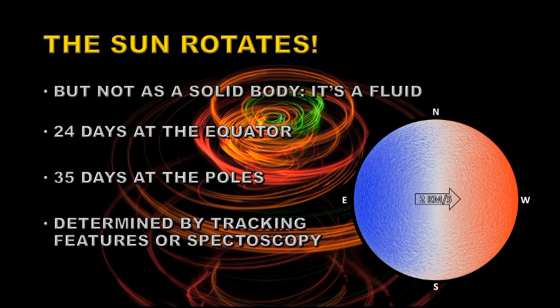And you can determine this by either following features across the surface of the Sun or using spectroscopy. You can look for the Doppler shift in spectral lines from the solar spectrum. You can see from the lines on the eastern side of the Sun that the plasma is coming towards you and on the western side that it's going away from you. So on the east it's blue shifted, on the west it's red shifted, and you can measure that velocity at about two kilometers per second.